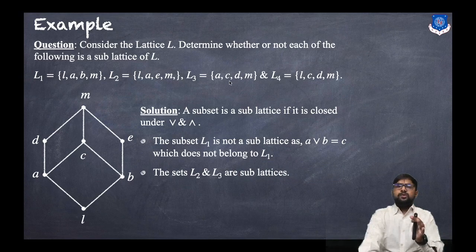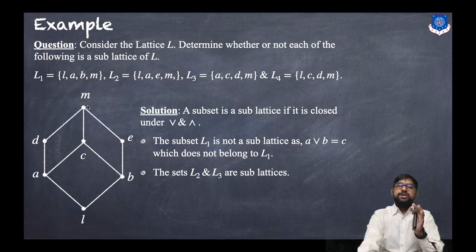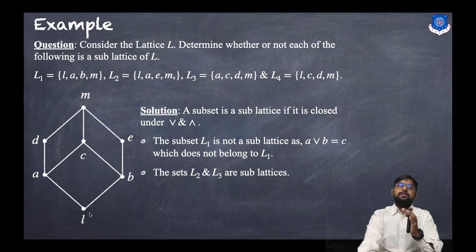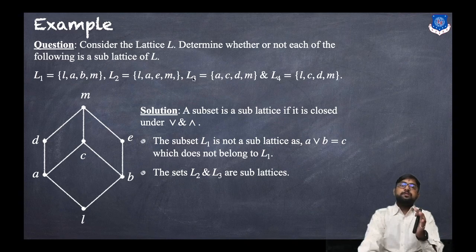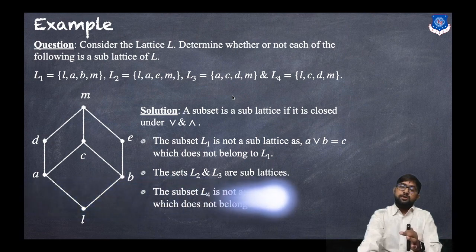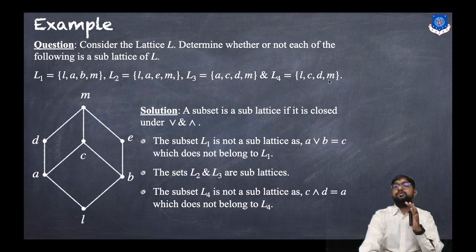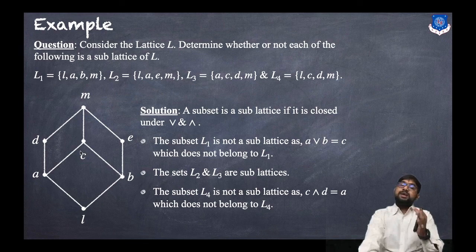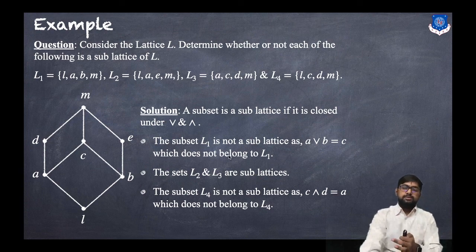For L2 = {l, a, e, m}: check LUB and GLB for all pairs — e ∧ m = m, e ∨ m = e, l ∨ a = a, all within the set. The LUB and GLB for every pair belong to L2, so L2 is a sublattice. Similarly, L3 is a sublattice. For L4: consider the pair c and d — their GLB is a, but a does not belong to L4. Therefore L4 is not a sublattice.